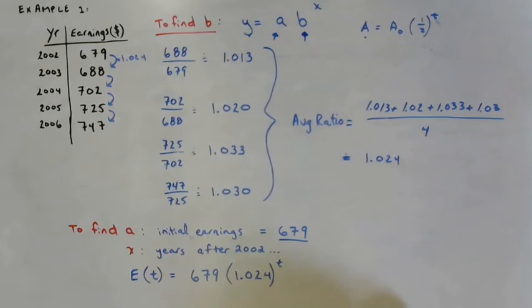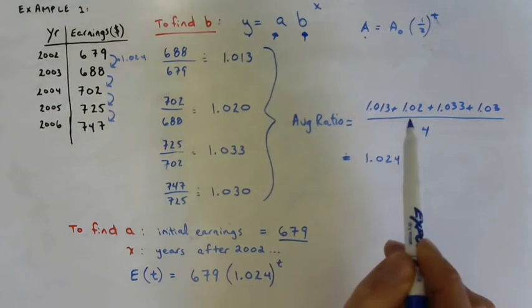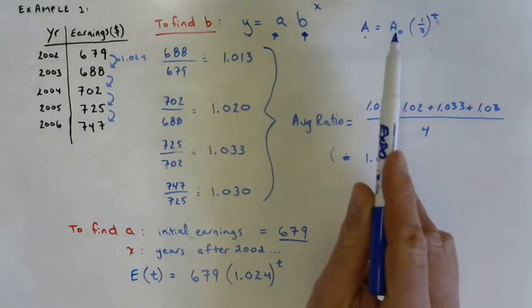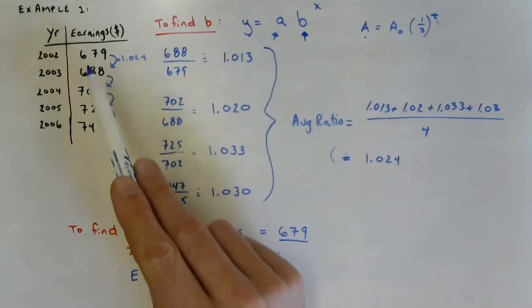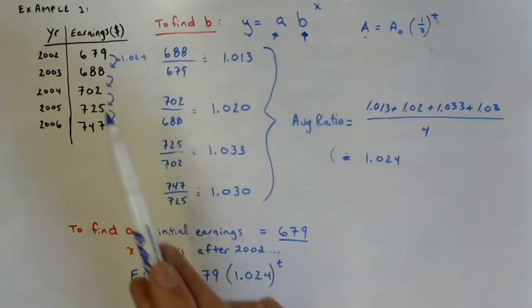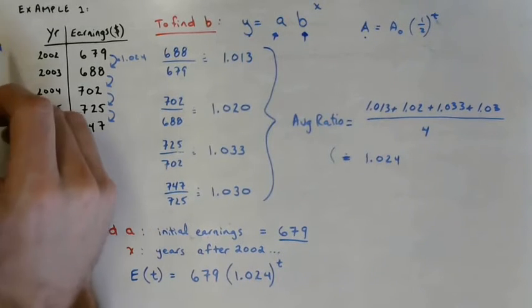And that came right from the work that we did. We found our ratios of successive terms. We took the average to find a ratio that would model the growth. And then we started, we had our initial earnings, which is 679. And then we're counting the years from 2002. So if you put a zero in here, you'll get the earnings in 2002. If you put a one here, you'll get the earnings from 2003. If you put a two here, you'll get the approximate earnings from 2004. So on and so forth.